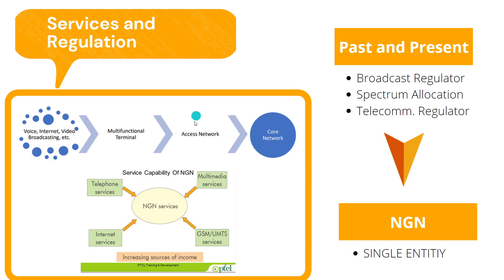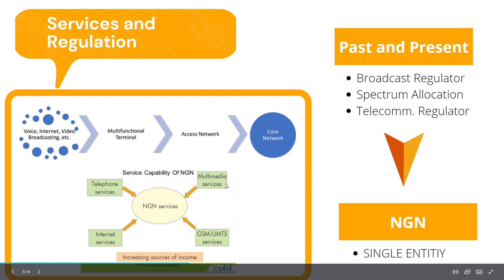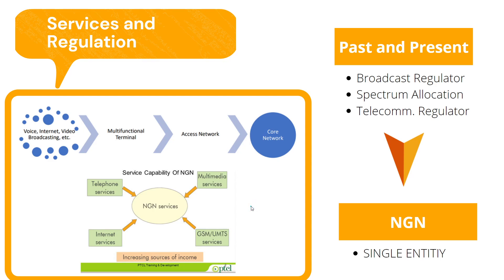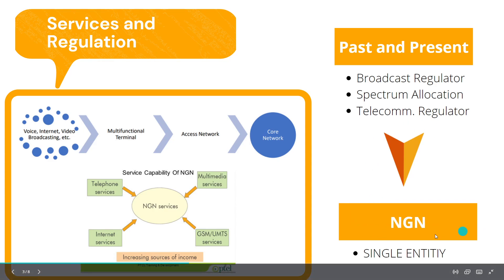This requires it to be regulated by a single regulatory body in the communication sector. The second image shows the service capability of NGN, and as you can see it basically covers almost everything in the networking service — telephone, multimedia, internet, GSM, UMTS, and so on. The diagram shows that from the past to the current era, the network was divided into three parts: the broadcast regulator, spectrum allocation, and telecom communication regulator. But in the NGN era, it is far more simplified into only one single body or entity.